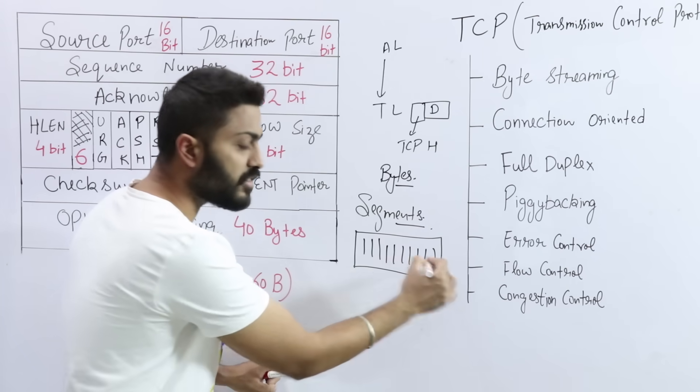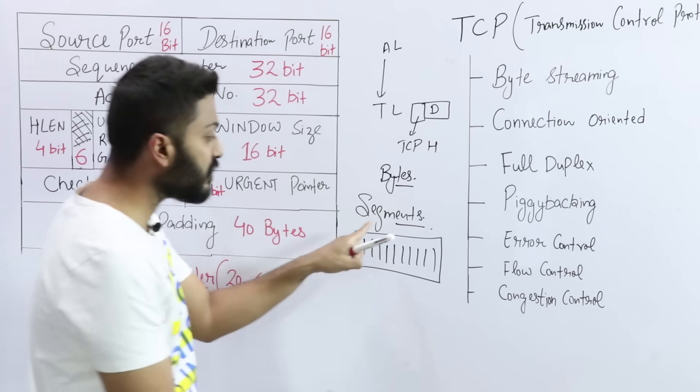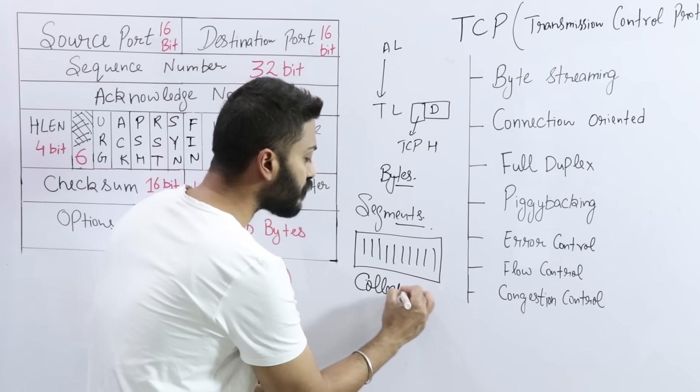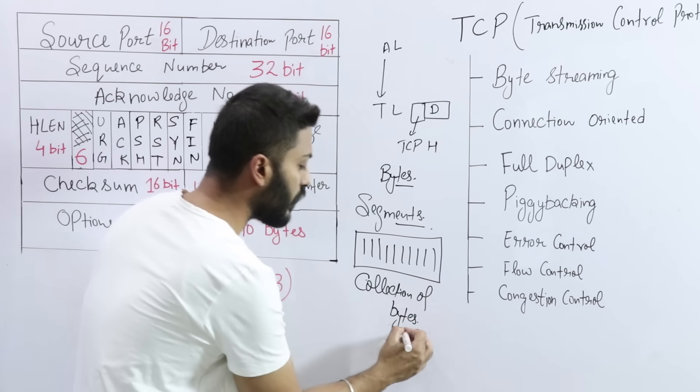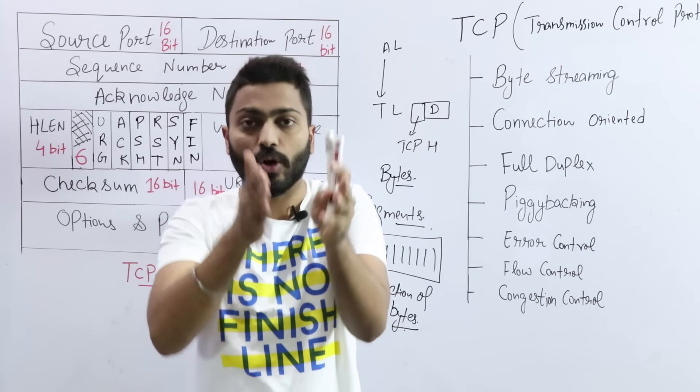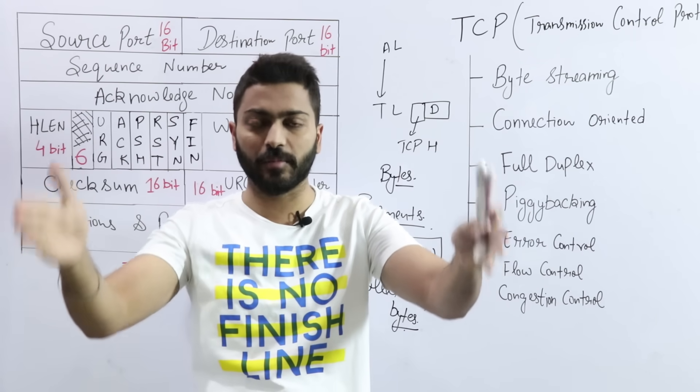TCP creates segments and in every segment there will be many bytes. These are all bytes. What is a segment? Segment is a collection of bytes.